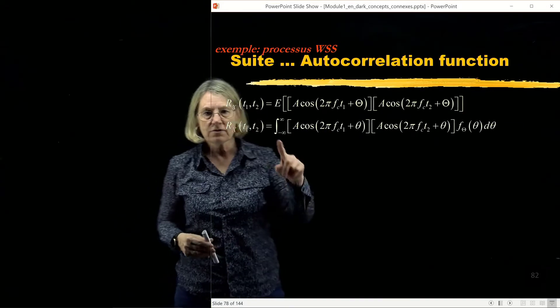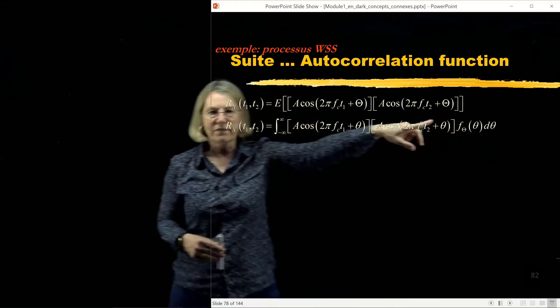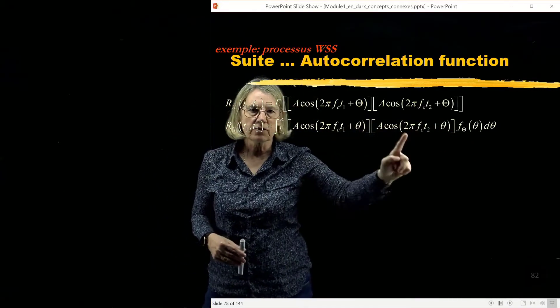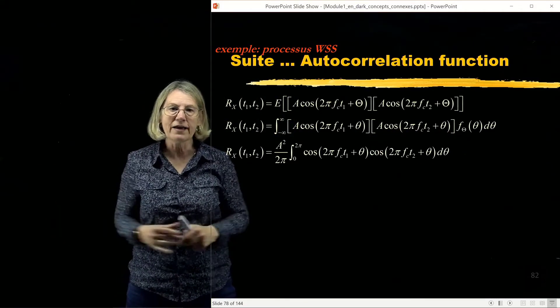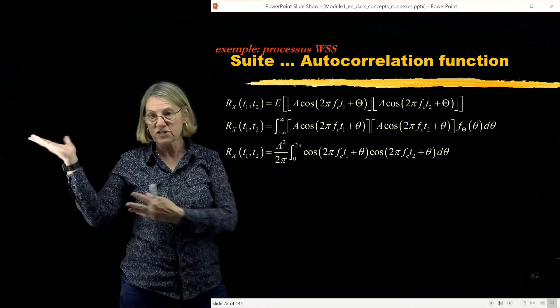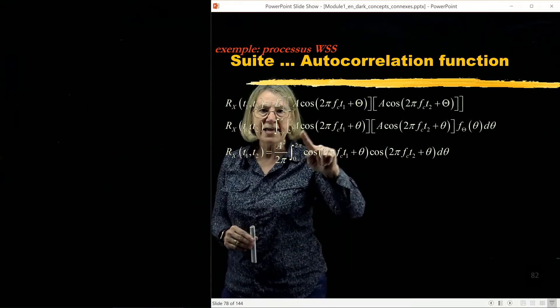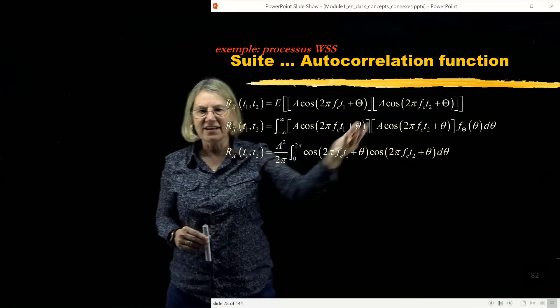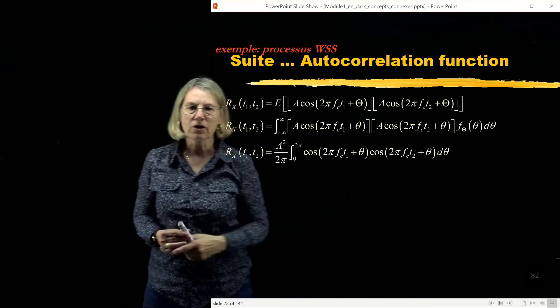So I have to evaluate the expected value of this product. So expected value, that means minus infinity to infinity averaged over the density function. And here of course it's the same, but for this density function I know it's 1 over 2π and it reduces the minus infinity to infinity to just the interval 0 to 2π, just like we saw when we were calculating the mean value. And so now of course the a's are not random, they're not depending on theta, so I can pull it out of the integral of dθ.